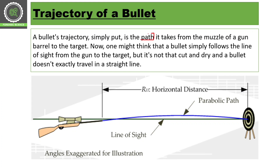Trajectory is nothing but the particular path of the bullet. When the bullet comes from the muzzle of the gun and hits the target, whichever path it follows — that particular path is called the trajectory of the bullet.